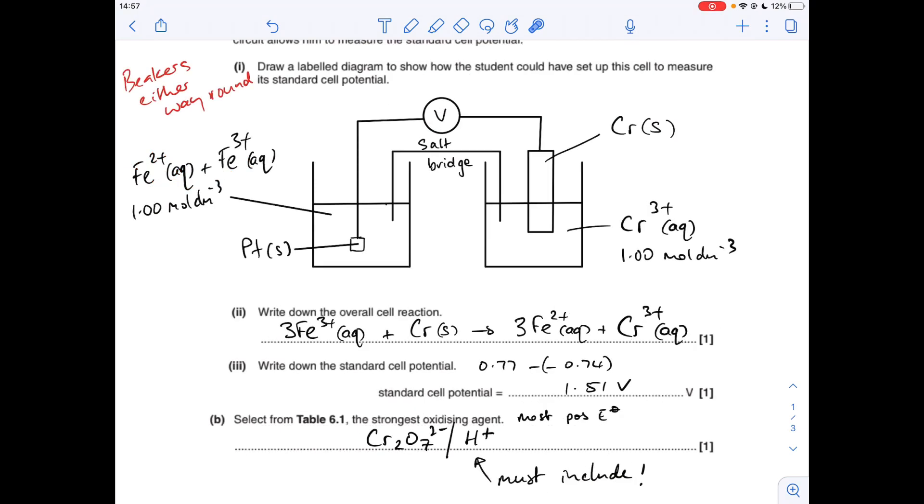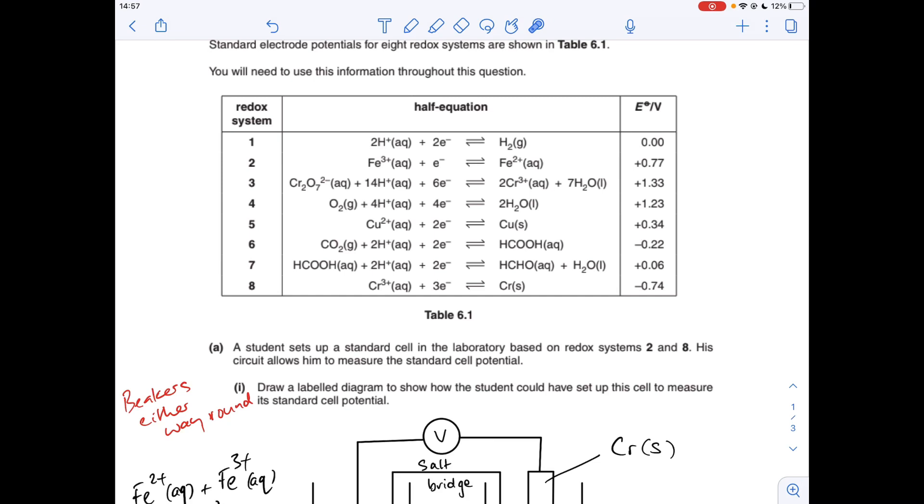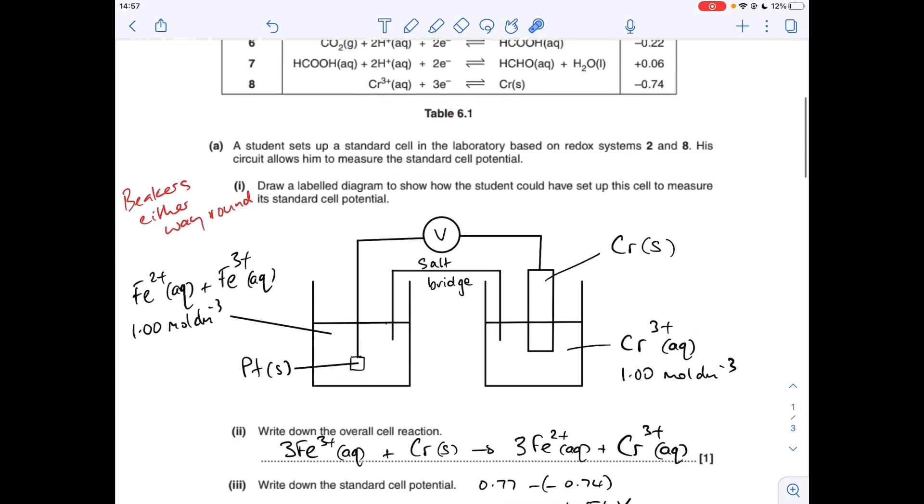Part B, select from the table the strongest oxidising agents. So just remember, oxidising agents are electron acceptors. So these are the things on the left-hand side of these half equations. So we're looking for the species most likely or most able to accept electrons. It's got the highest positive standard electrode potential. It's this one here, plus 1.33 volts. But remember, it's not just the dichromate 6 ions, it's the H plus ions as well. So both of those are needed for the mark.